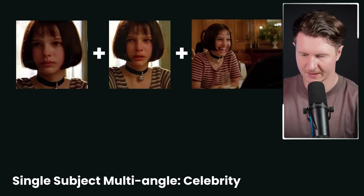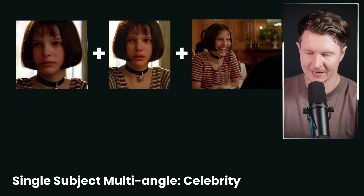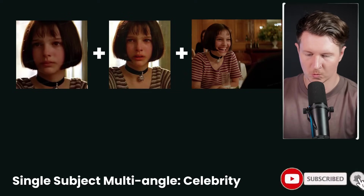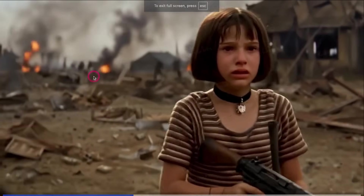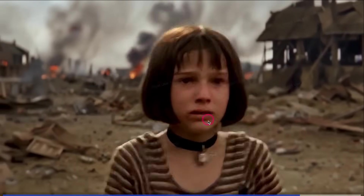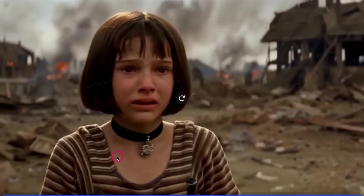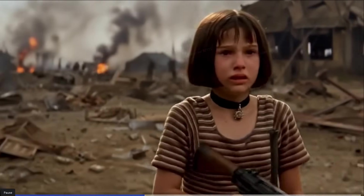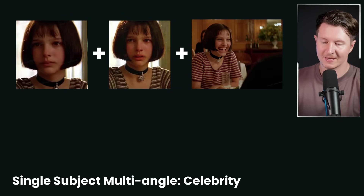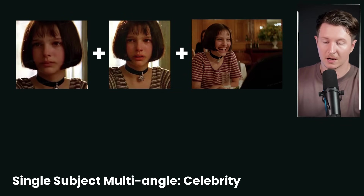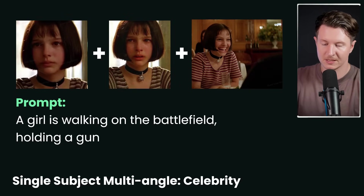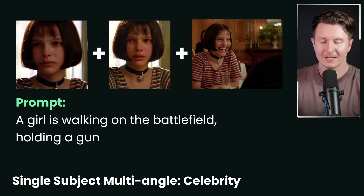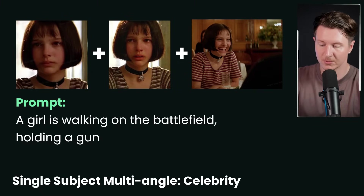Let's take another look. Here is Natalie Portman in Leon, and you can see that a lot of elements have been taken from this and recreated in the AI video. We've got everything from the choker to the stripy top, and it has an uncanny resemblance to Natalie Portman. This was created simply by inputting three images and then using the prompt 'a girl is walking on the battlefield holding a gun.' And you can also see that it maintains the tonalities and the color grading from the three shots that have been input.